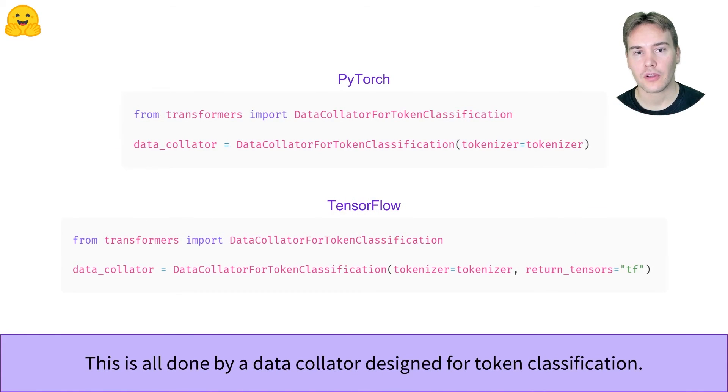This is all done for us by the data collator for token classification, which you can use in PyTorch or TensorFlow. With all of this, you are either ready to send your data and this data collator to the trainer, or use the to_tf_dataset method and the fit method of your Keras model.